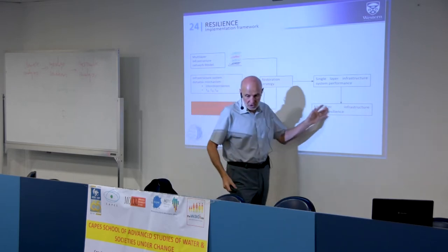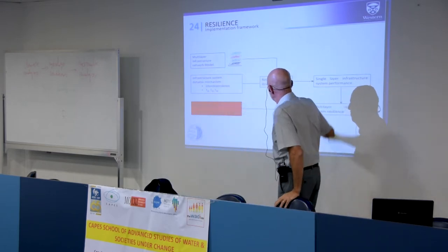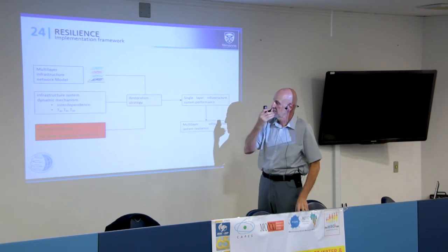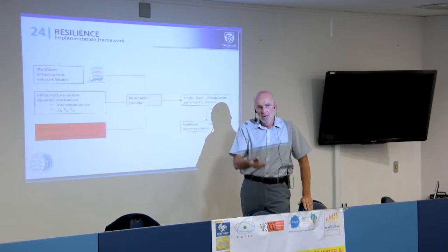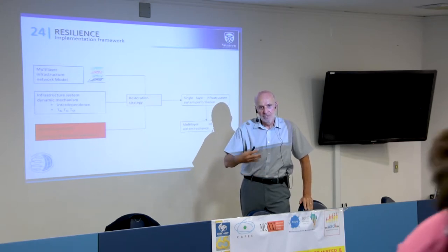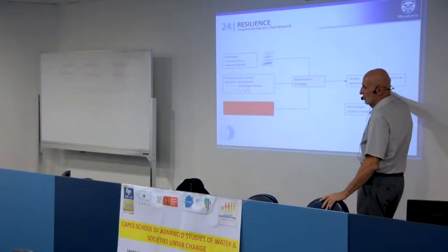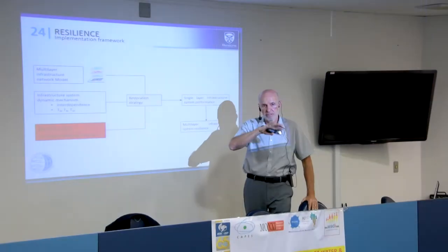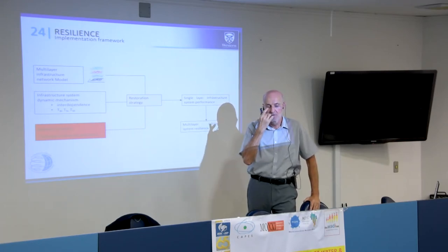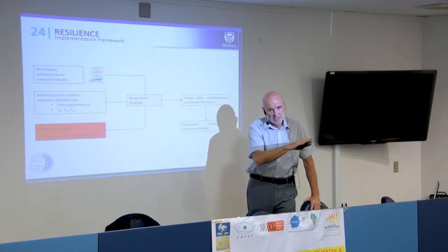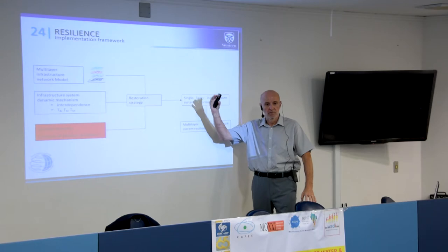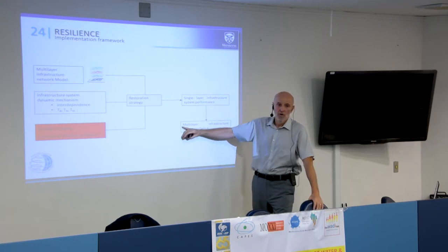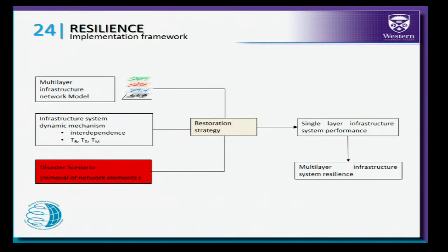What is good about this approach is that we can show the resilience of different layers — for example, capturing only the resilience of the water infrastructure, or showing the resilience of the information infrastructure — each captured by its own resilience curve. Or we can combine them together and show the resilience of all networks and interconnections in the system.